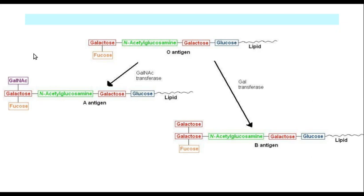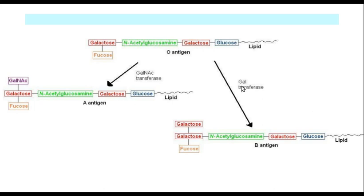The enzyme that produces the A antigen is N-acetyl-galactose transferase. The H antigen consists of glucose, galactose, N-acetyl-glucosamine, galactose, and fucose. When the enzyme N-acetyl-galactose transferase acts, it attaches an N-acetyl-galactose molecule and converts the H antigen into the A antigen. If the enzyme is a plain galactose transferase, which attaches a galactose carbohydrate, then we have the production of the B antigen.